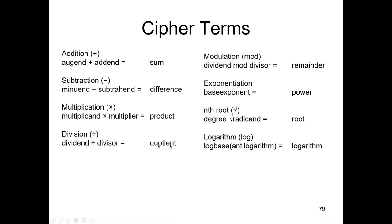These are just terminologies. For addition we have augend and addend. Subtraction: minuend and subtrahend. Multiplication: multiplicand and multiplier, and the answer is the product. Division: a dividend divided by the divisor gives you a quotient.